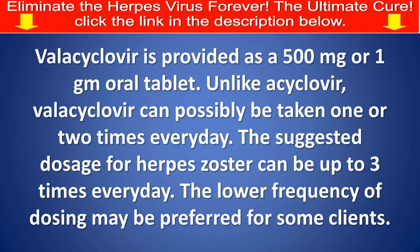Valacyclovir is provided as a 500mg or 1g oral tablet. Unlike acyclovir, valacyclovir can be taken 1 or 2 times every day. The suggested dosage for herpes zoster can be up to 3 times every day. The lower frequency of dosing may be preferred for some patients.